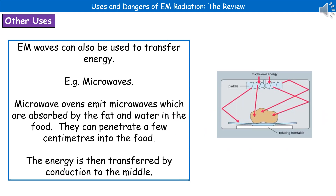Another key use of electromagnetic radiation is the transfer of energy. One example is the microwave oven. Microwave ovens, as the name suggests, emit microwaves, which are absorbed by fat and water in food. They're able to penetrate a couple of centimeters into the food and be absorbed by all the particles in those first couple of centimeters all the way around. The energy from those first couple of centimeters is then transferred through to the middle by conduction, cooking the food quite quickly.